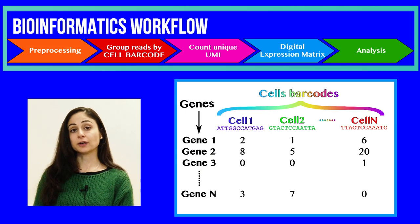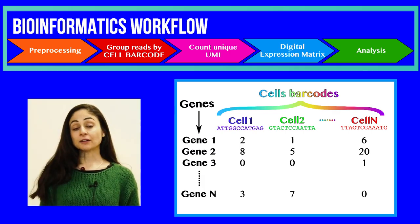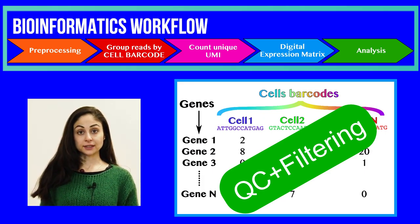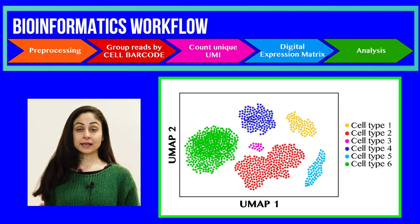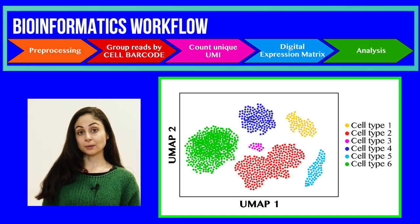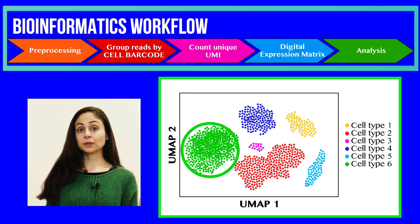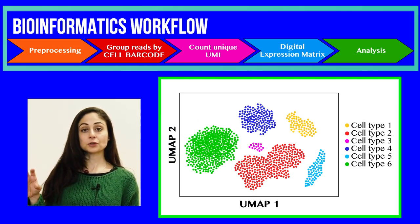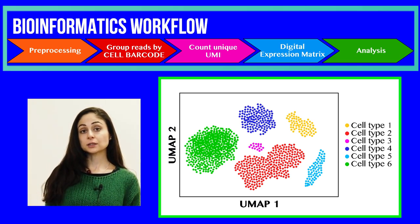In this way, we end up with the so-called digital expression matrix — a matrix in which we have for each specific cell the level of expression of all identified genes. After obtaining the digital expression matrix, we perform some QC and filtering. We then use clustering algorithms to produce visualizations such as t-SNE or UMAP. On these graphs, each dot represents a cell, and cells that are more similar at the transcriptome level are clustered together, so on a single UMAP we can observe different kinds of populations, each characterized by a specific subset of marker genes.